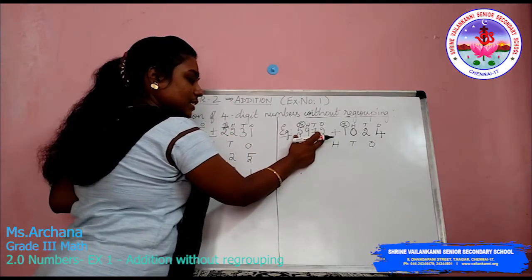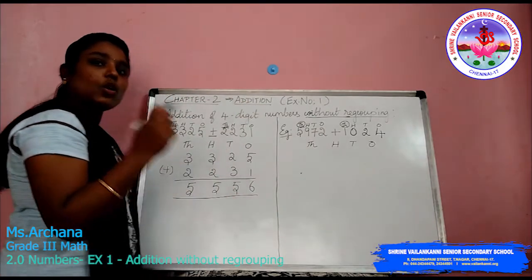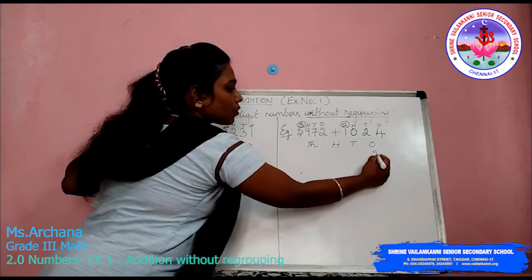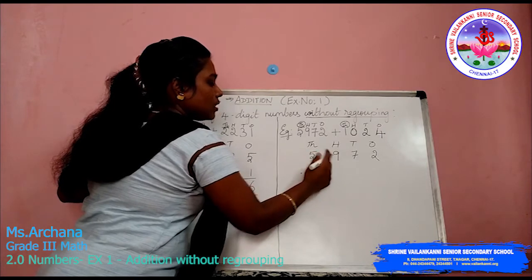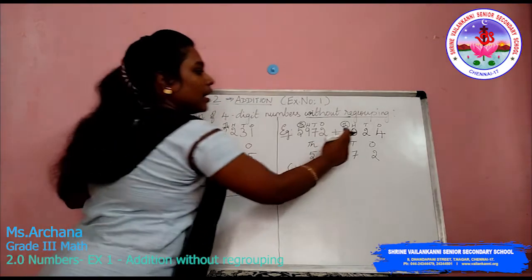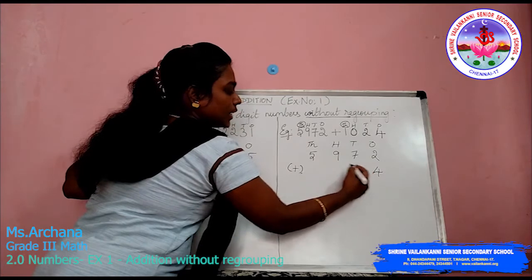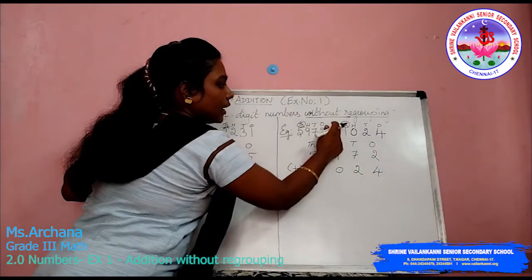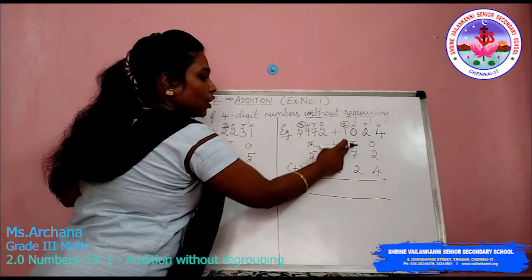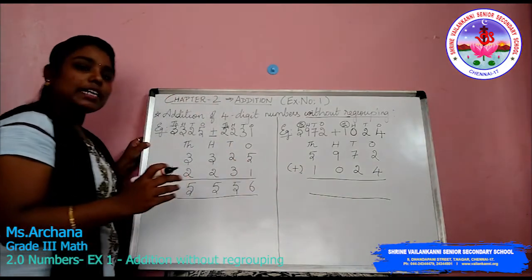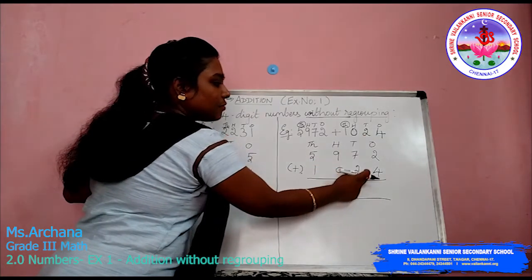After writing the place value, start taking the first number and write it according to the place value. You are supposed to start from the 1s place. So under 1s place you have 2, in 10s you have 7, in 100s you have 9, in 1000s you have 5. This number has to be added with the second set of numbers, starting from the 1s place again: 4 in 1s, 0 in 10s and 100s, and 1 in 1000s. Can you see the numbers are arranged in order by place value?